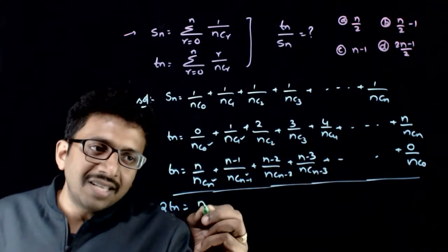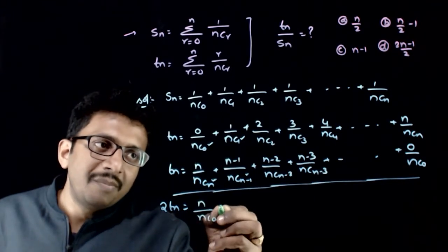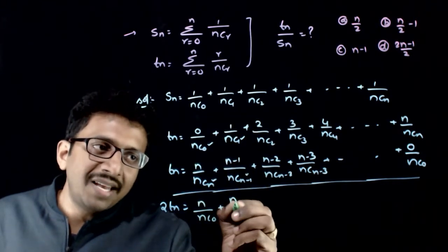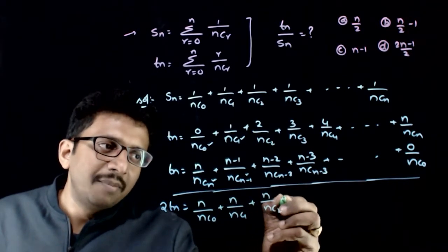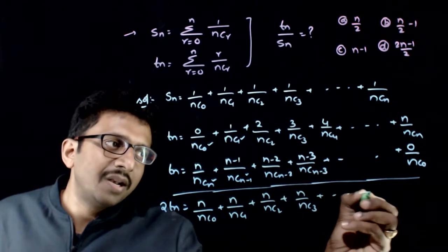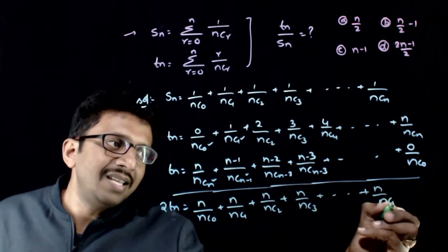So 0 plus n, that is n by nC0, plus 1 plus n minus 1 is again n by nC1, plus n by nC2, plus n by nC3, plus so on, plus n by nCn.